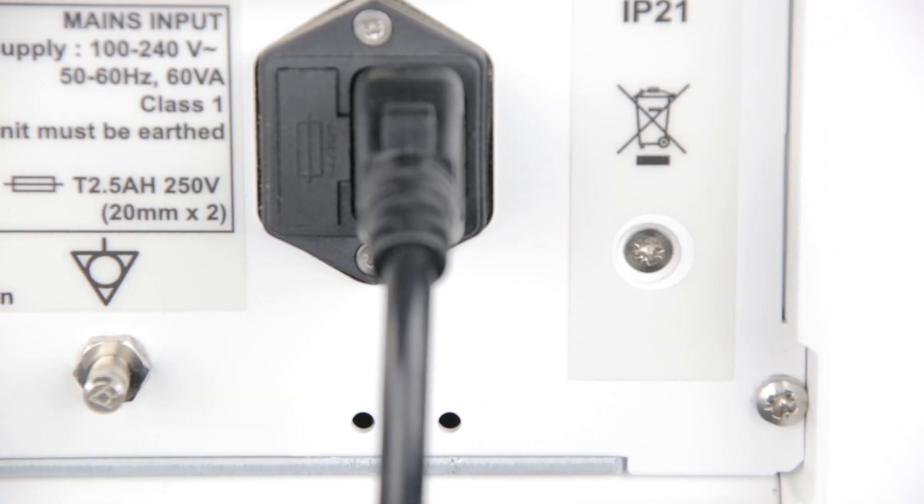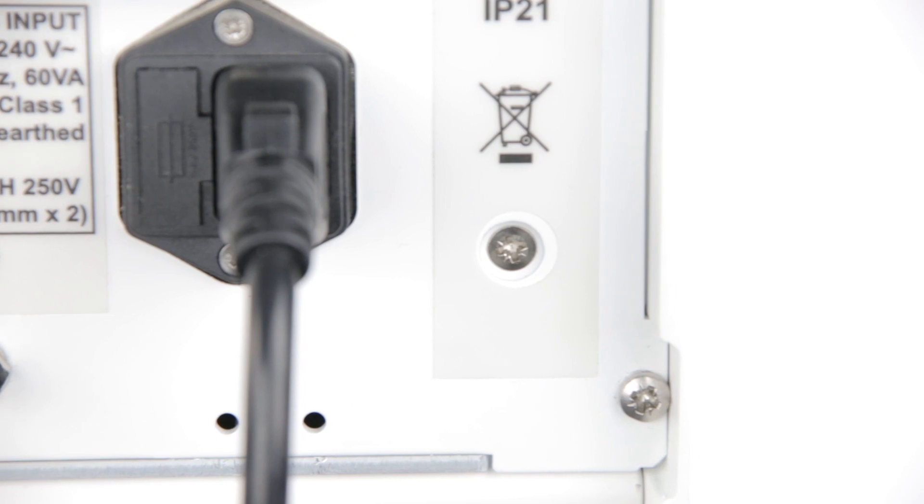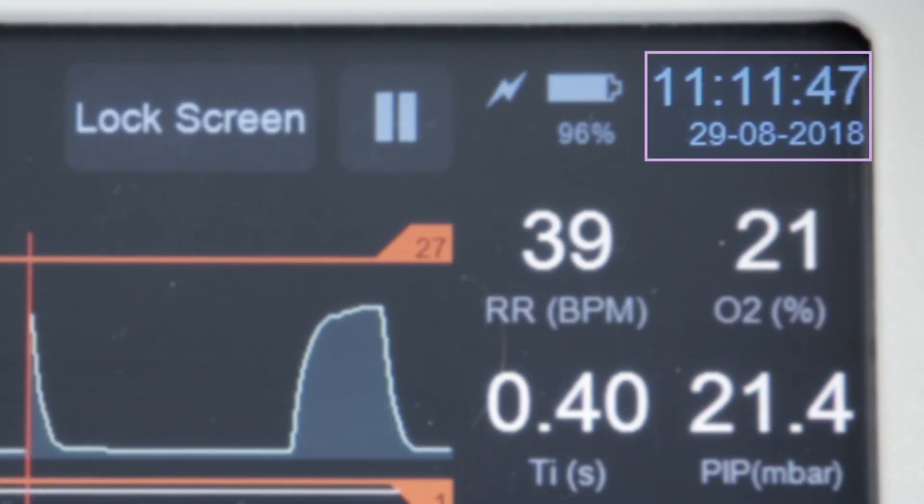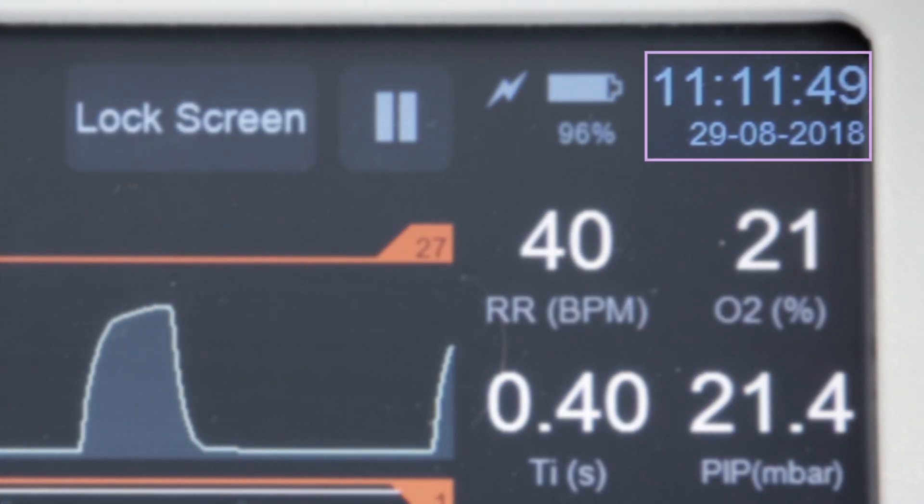Battery charging area: When connected to the mains, a lightning symbol appears. A representation of the battery with its percentage charge underneath will also be shown. The top right corner shows the time and underneath the date.